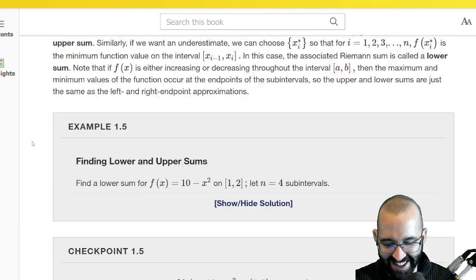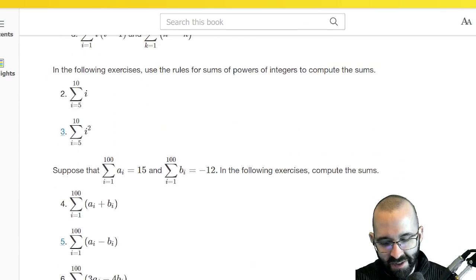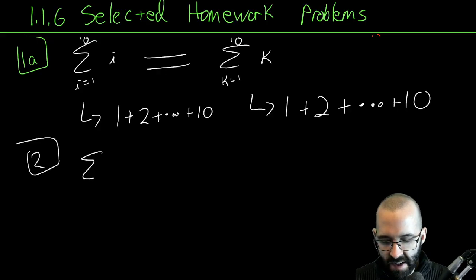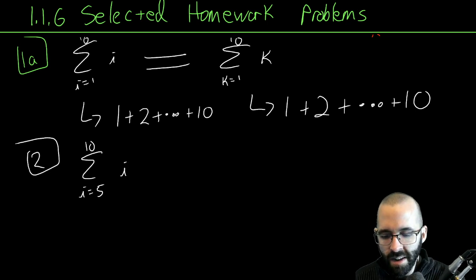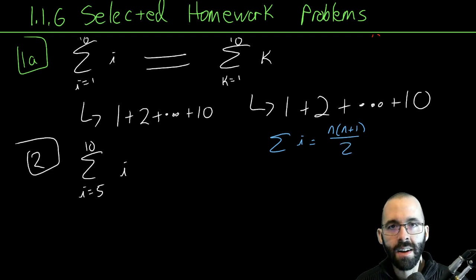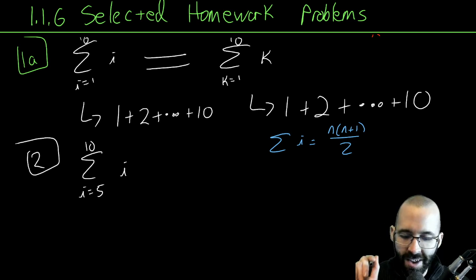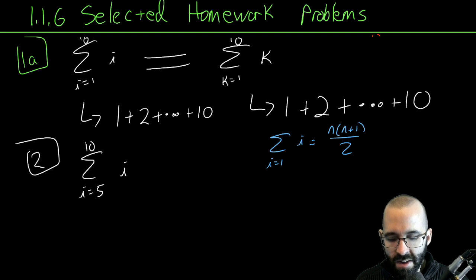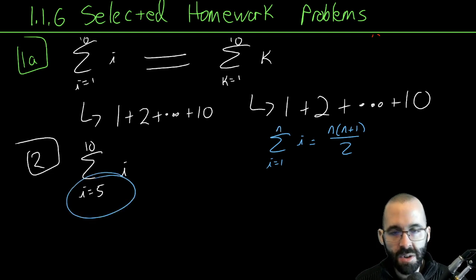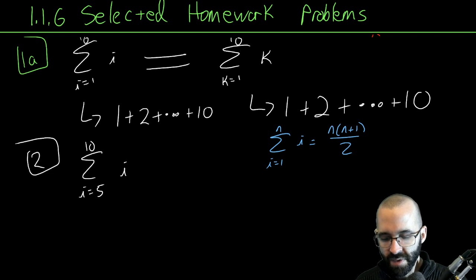Example 2: use the rules for sums and powers of integers to compute the sum from i equals 5 to 10 of i. Now, that's easy — we know the sum of i is just N times N plus 1 over 2, right? But be very careful: that formula only works if i goes from 1 to some N. Notice here we're starting at 5, so you could do this manually, but it's good practice to use these properties.